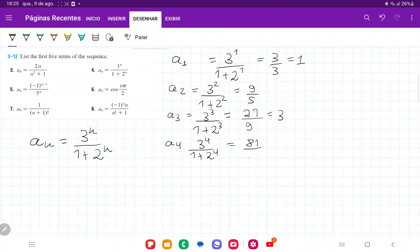And lastly for a₅, we have 3 to the power of 5 over 1 plus 2 to the power of 5.